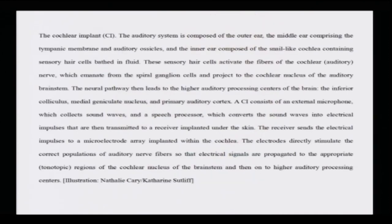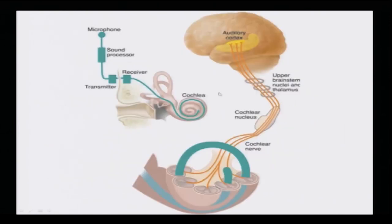The micro-electrode array implanted within the cochlea allows the electrodes to directly stimulate the correct population of auditory nerves. The electrical signals are propagated to the appropriate tonotopic regions of the cochlear nucleus of the brain stem, and then on to the higher auditory cortex.